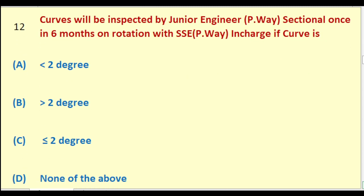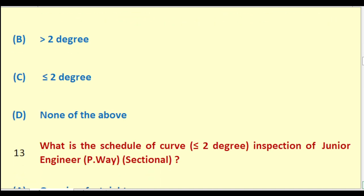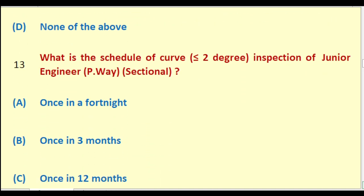Curves will be inspected by Junior Engineer Permanent Way Sectional once in six months on rotation with SSE Permanent Way in charge if the curve is: less than two degree; greater than two degree; less than or equal to two degree; none of the above. The right answer is: greater than two degree.